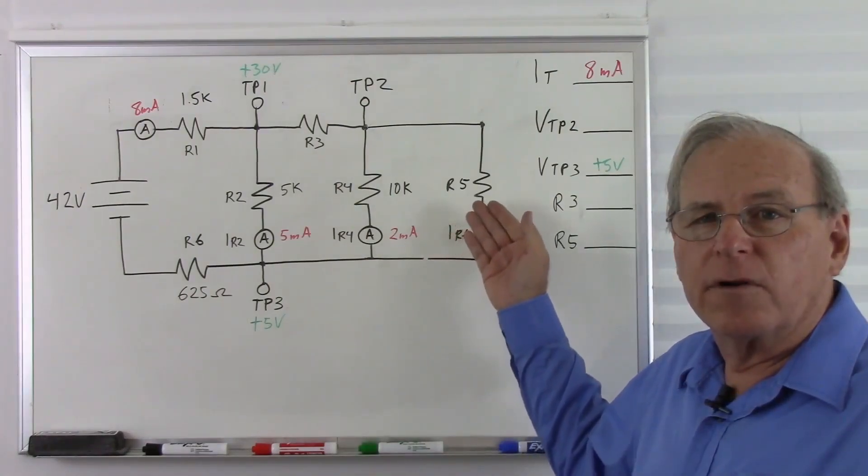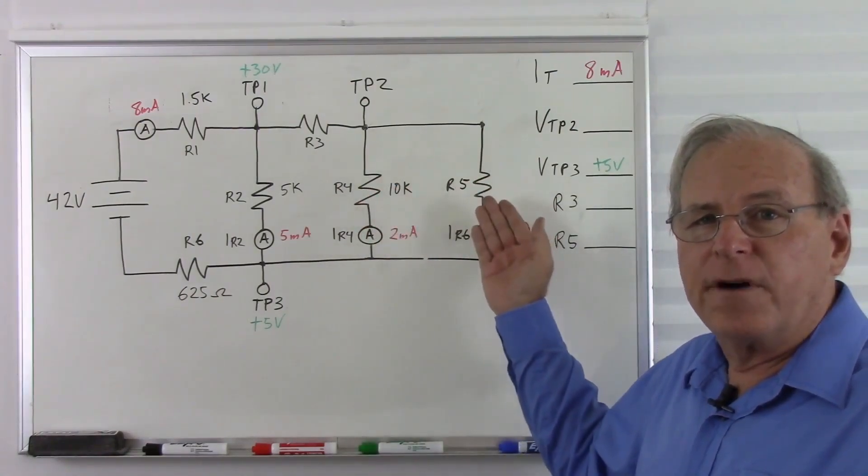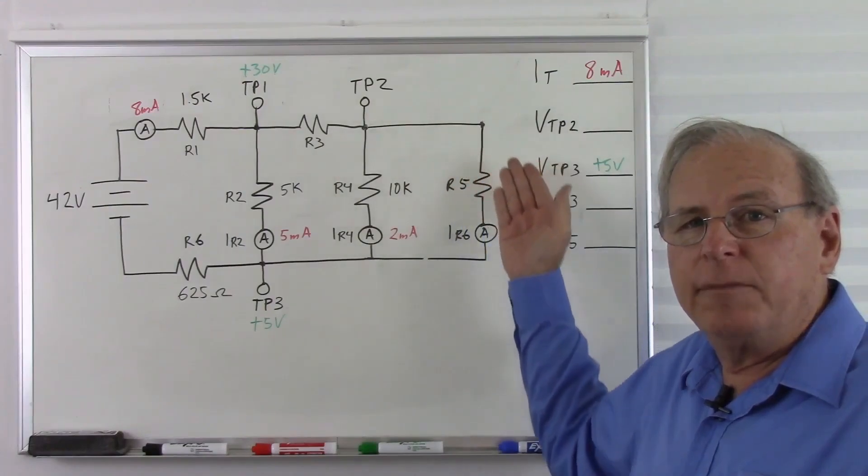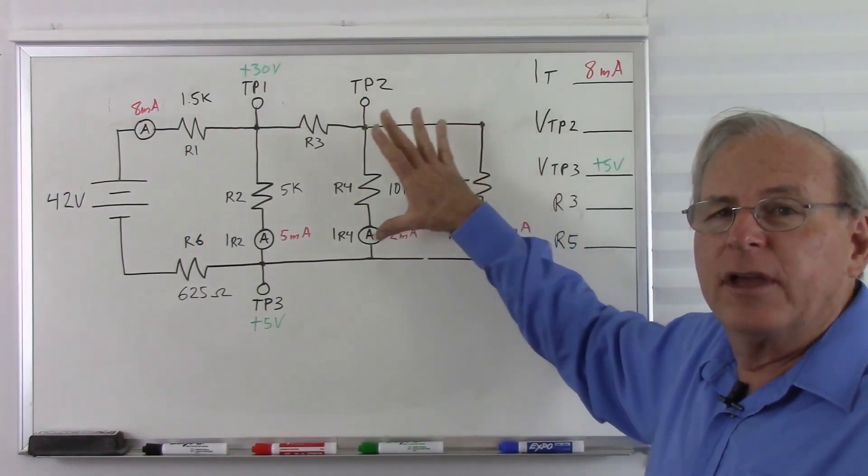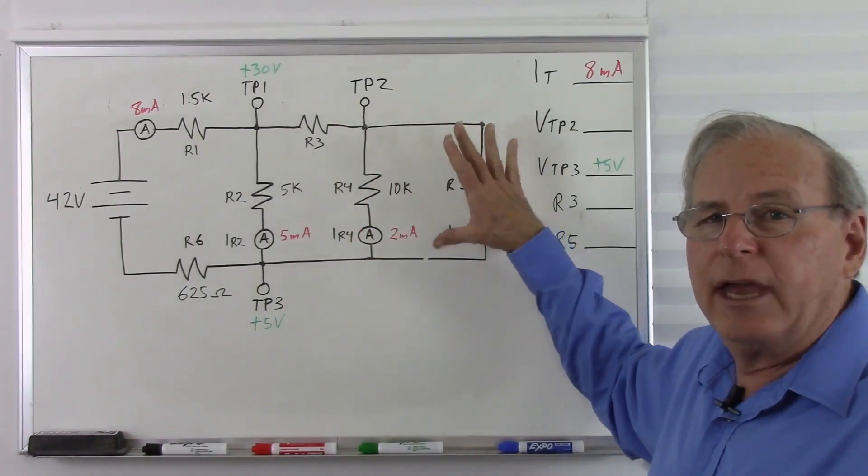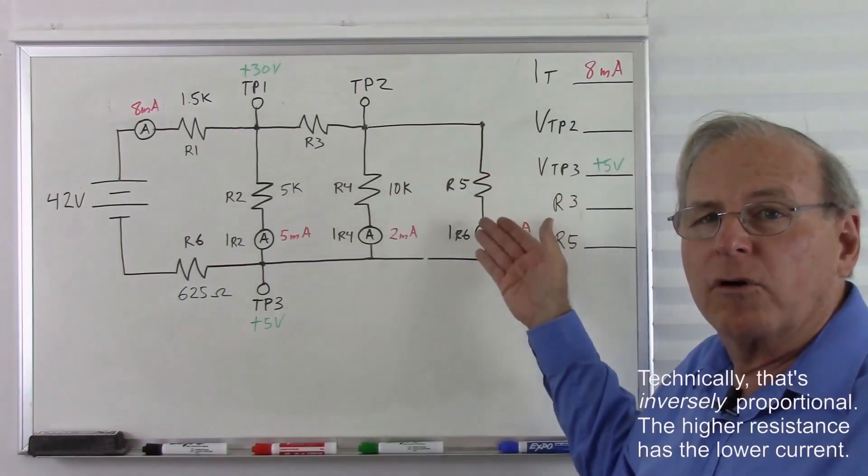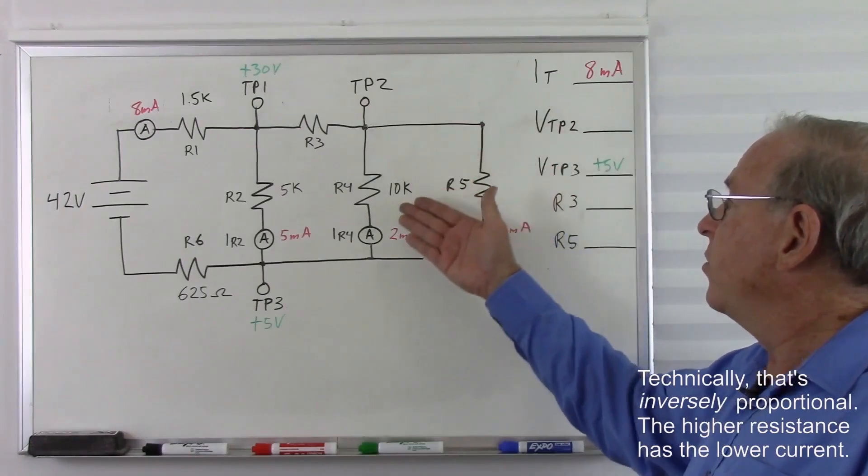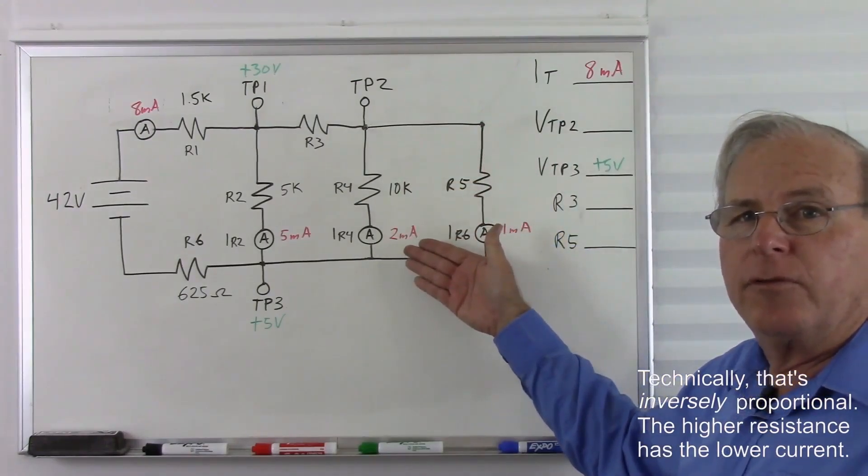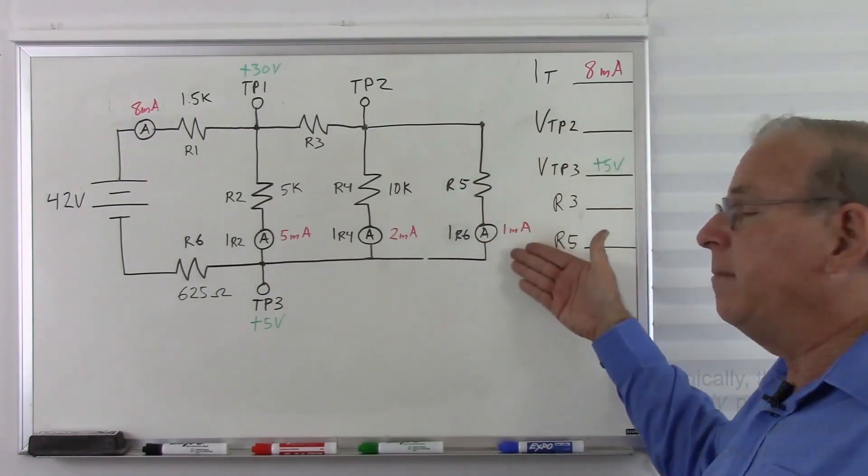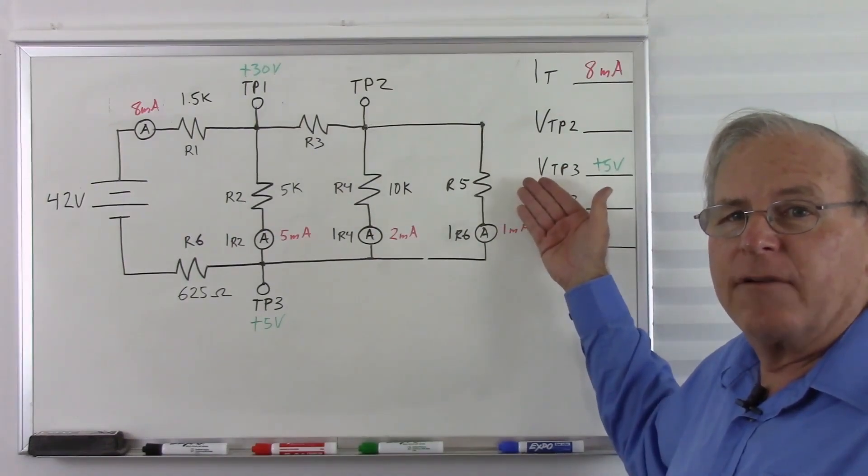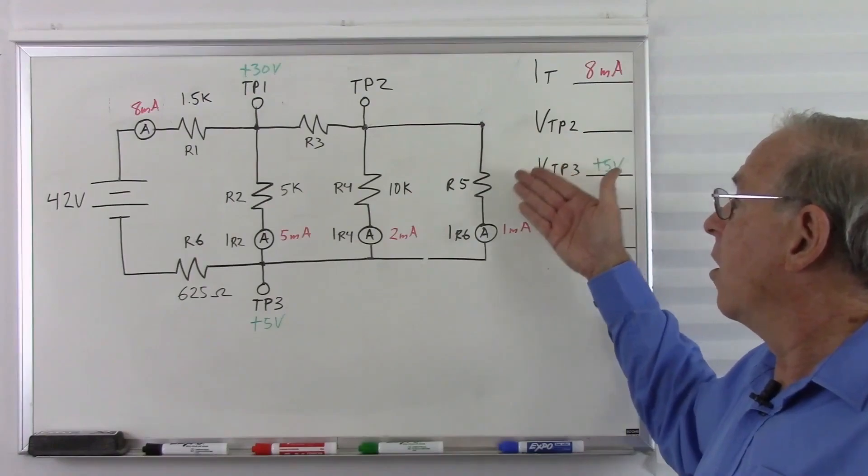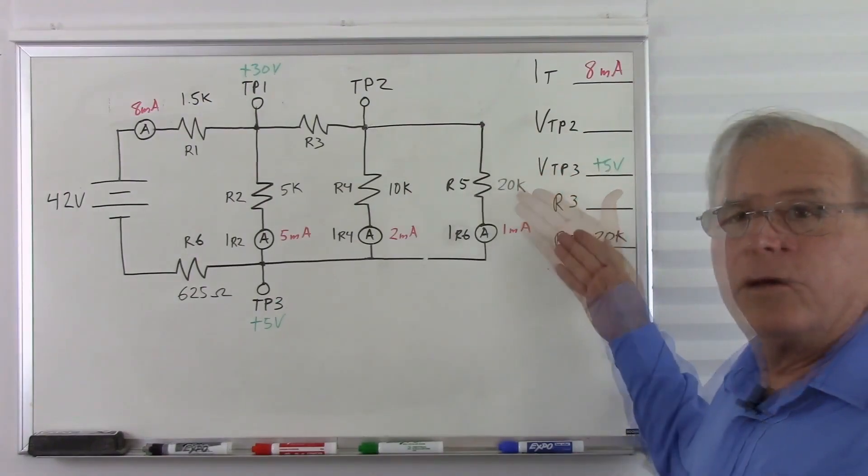Now let's go for the value of R5. R4 and R5 are in parallel. There's nothing between them, and they are connected together, two current paths, and so the voltage must be the same, and the currents must be proportional to the resistance. So we see that we have 2 milliamps going through 10k, and we have 1 milliamp here. So if we have half the current, we must have twice the resistance. So R5 must be 20k.